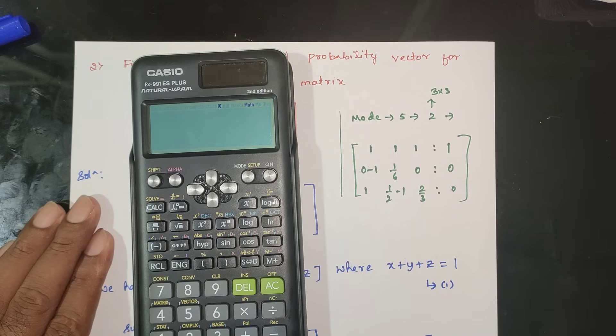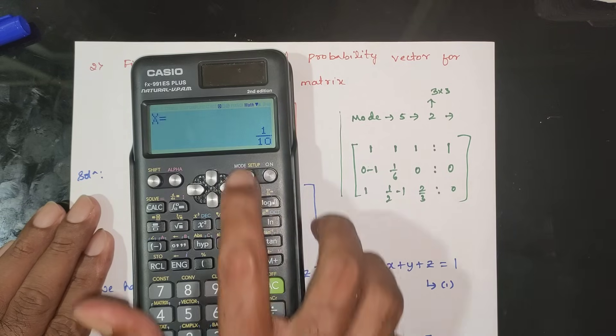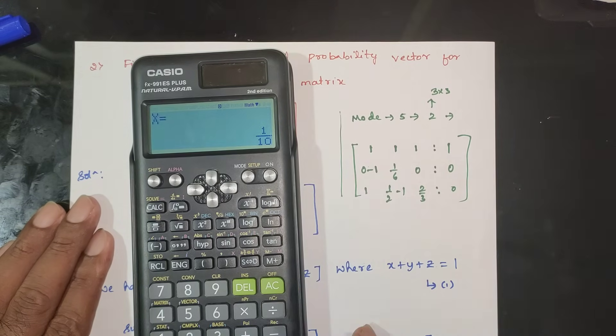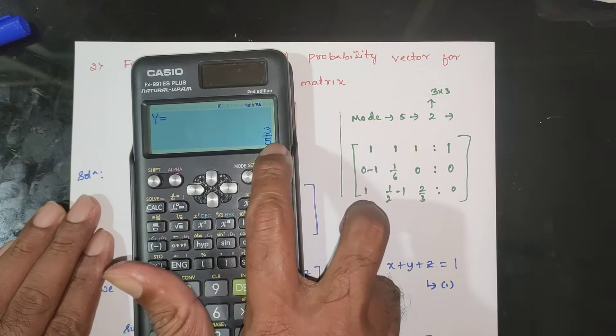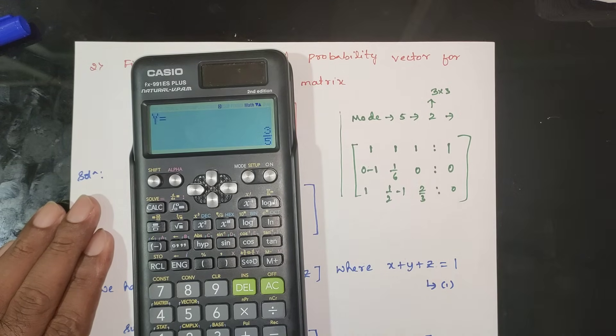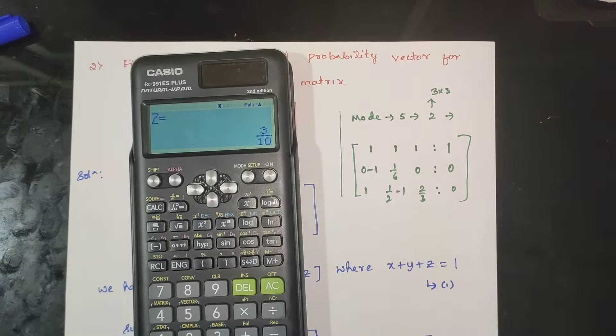The answer: x value equals 1/10, y value equals 3/5, z value equals 3/10. The unique fixed probability vector is v = [1/10, 3/5, 3/10].